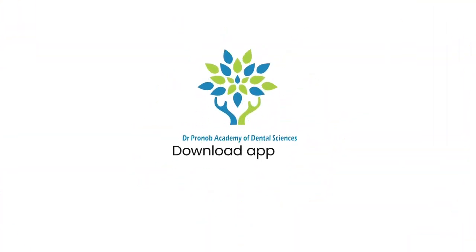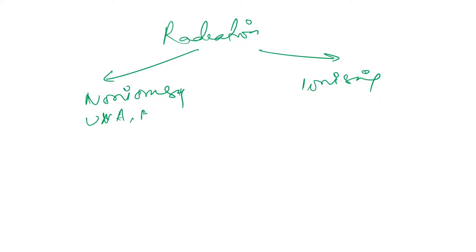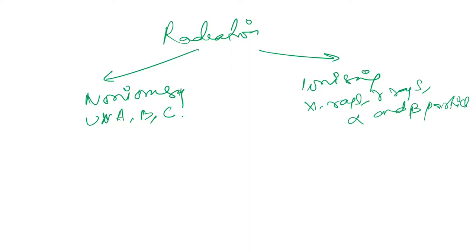Now we will talk about radiation. Radiation is of two types: non-ionizing and ionizing radiation. Non-ionizing radiation includes ultraviolet A, B, and C. Ionizing radiation includes X-rays, gamma rays, alpha and beta particles.